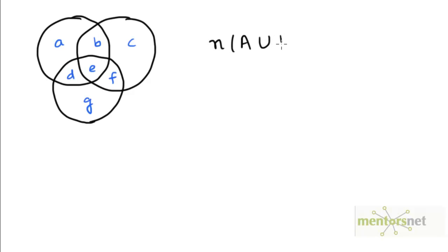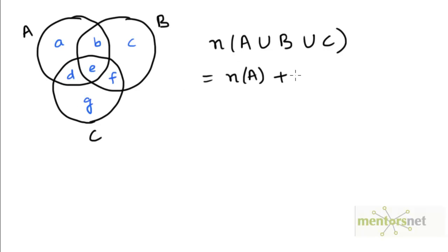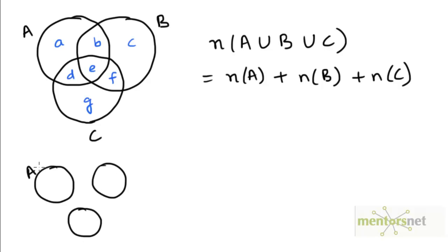Our goal is to count the number of elements which appear in A union B union C. The simplest way to start is by adding up the number of elements in the three sets individually — N(A), N(B), and N(C). The elements in region A would have been counted once, the elements in region C once, and the elements in region G once.